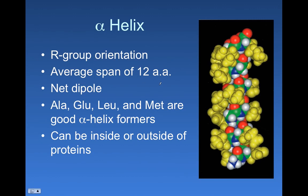Alpha helices tend to span around, on average, about 12 amino acids, but there's a lot of variability there. There's a net dipole, sort of a positive side and a negative side, to these helices because those hydrogen bonds are oriented in a particular way.